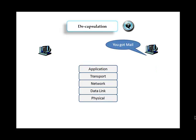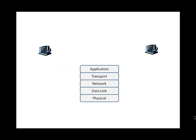The data is then sent up to the application layer, where the recipient receives whatever information was sent from the other side. So information travels from computer A to computer B through the Internet Protocol stack, where data at the application layer has a header attached and is sent down through each layer.